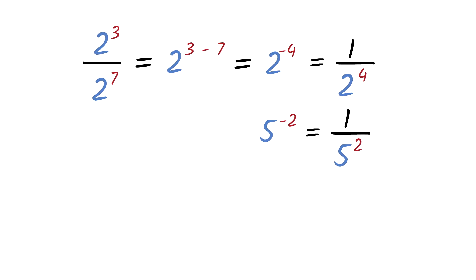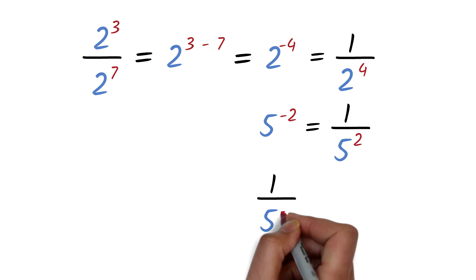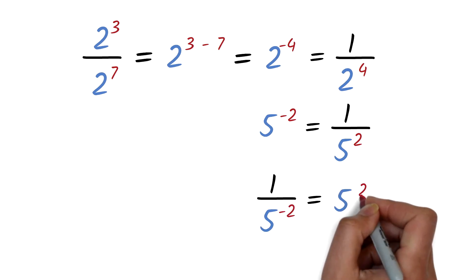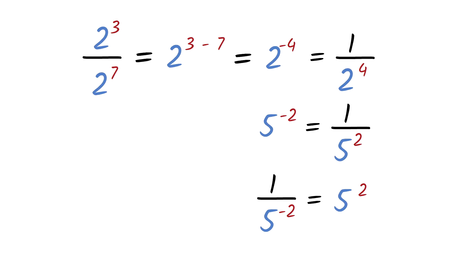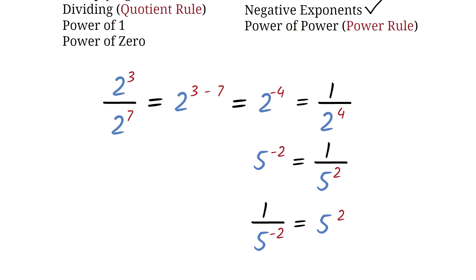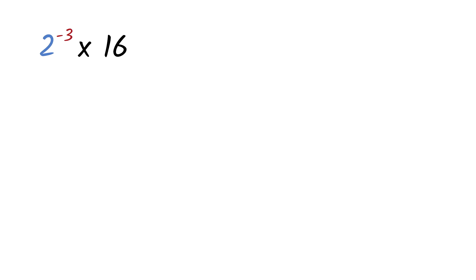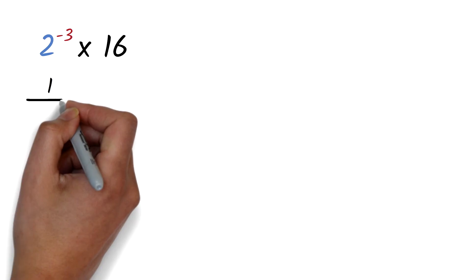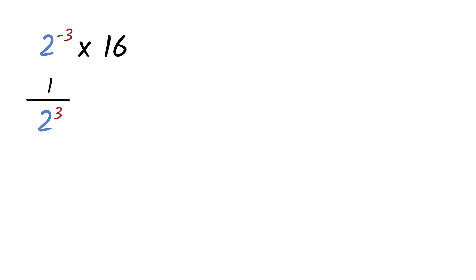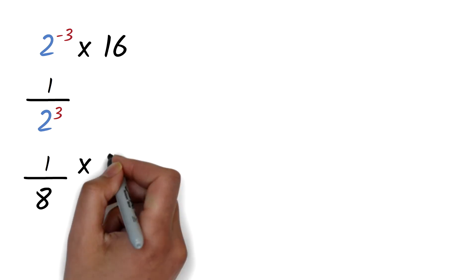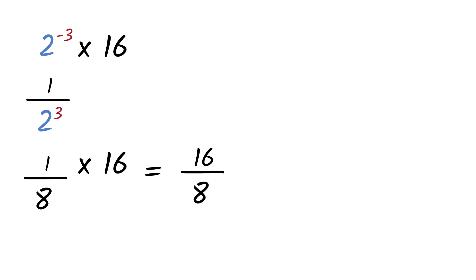Please note that the reversal is also true: if you have 1 over 5 exponent negative 2, you can move it to the numerator as 5 exponent positive 2. Now let's combine this with what we already learned. Simplify 2 exponent negative 3 times 16. From the negative exponent rule, 2 exponent negative 3 equals 1 over 2 exponent 3. Since 2 exponent 3 equals 8, we have 1 over 8 times 16, which gives 16 over 8. 16 divided by 8 is 2, so our answer is 2.